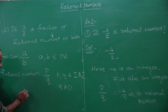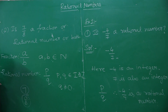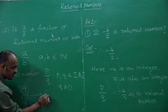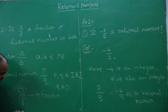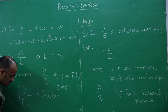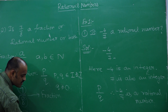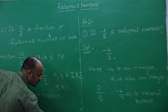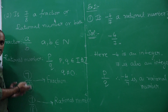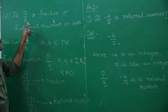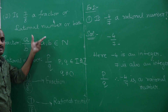Now, coming to the question: 7 by 8 — 7 is a natural number and 8 is also a natural number, and both are in the form of a by b. Therefore, it is a fraction. And 7 is an integer and 8 is also an integer, so it is in the form of p by q. Therefore, it is a rational number. Since all fractions are rational numbers, 7 by 8 is both a fraction and a rational number.